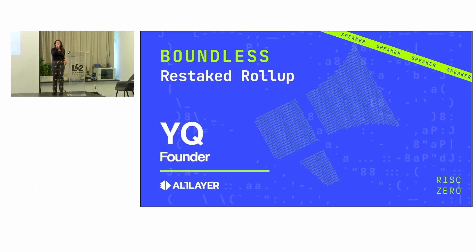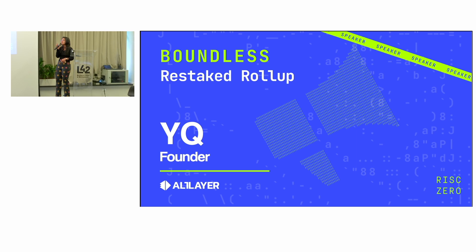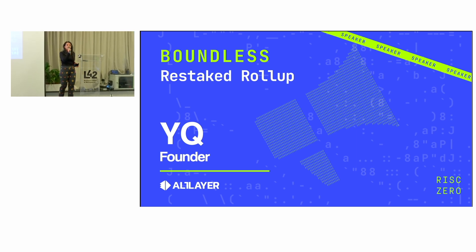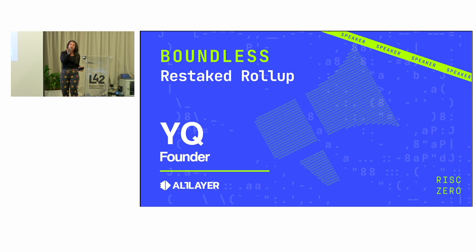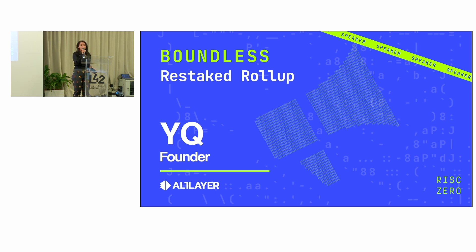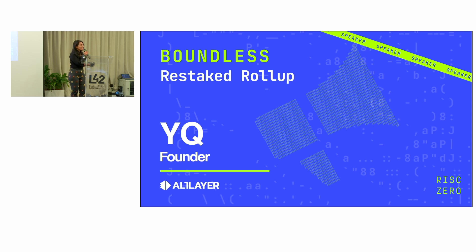We are continuing with the restaking theme. That was an amazing panel where we really got to understand the trade-offs for both AVSs and coprocessors and how they engage with ZK Compute. Now we have YQ from Altlair, who has been collaborating with us on on-demand ZK proofs. He will be going through Altlair's infrastructure and how they're leveraging Eigenlayer's restaking mechanism to enable both native and restaked rollups to scale efficiently on their platform.